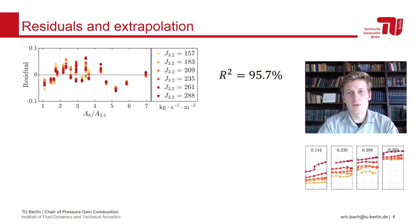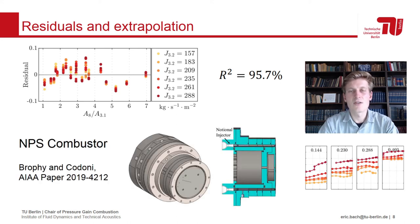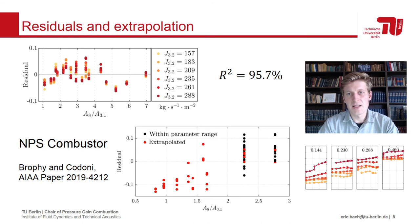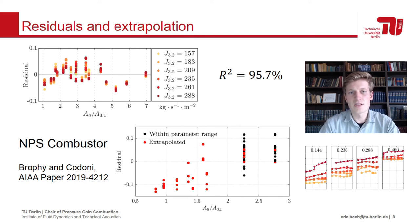Taking this one step further, we took our model and applied it to Brophy and Codoni's data set from the Naval Post Graduate School, without adjusting the coefficients. Their RDC, of course, differs significantly from the one at TU Berlin. Not only is it 70% larger in diameter, but it also features an axial air injection scheme. Here, we are again plotting the difference between estimated and actual pressure gain over the relative areas. We can see that although the residuals do increase slightly, this happens mostly for conditions which are extrapolated from our model. Those points are colored red. The black markers correspond to conditions that we covered in our experiment, and there the model does an equally good job. This is a very positive result and also an invitation to the RDC community to increase this data set on which the model can be trained.